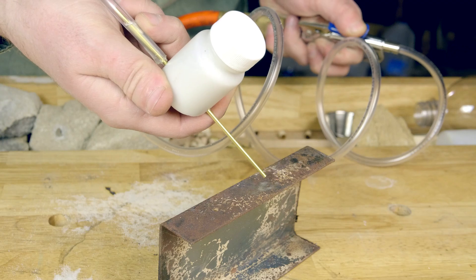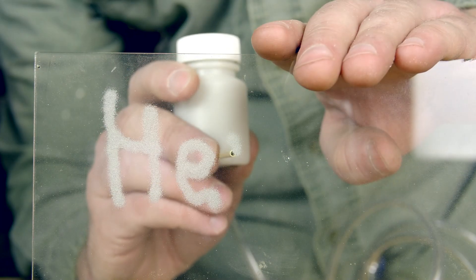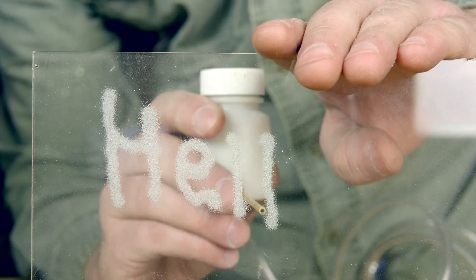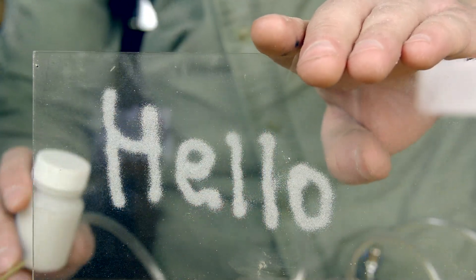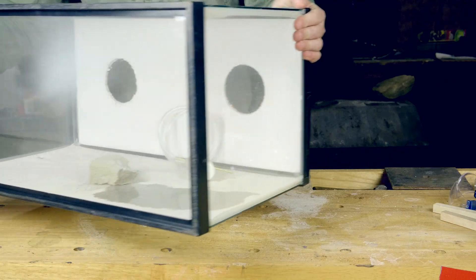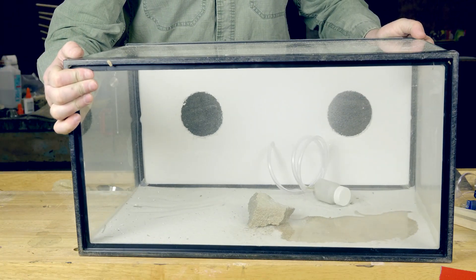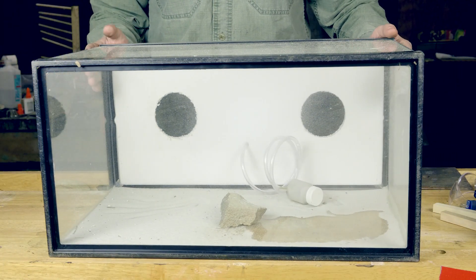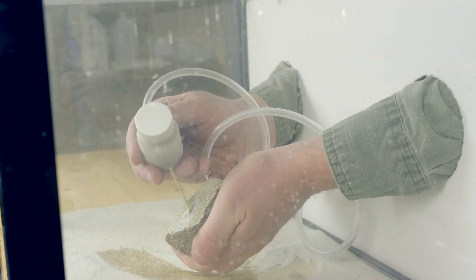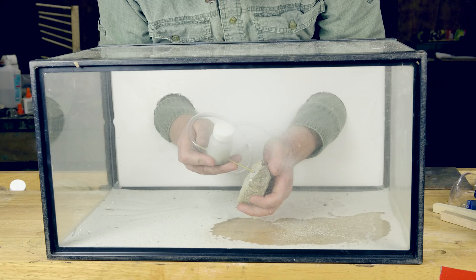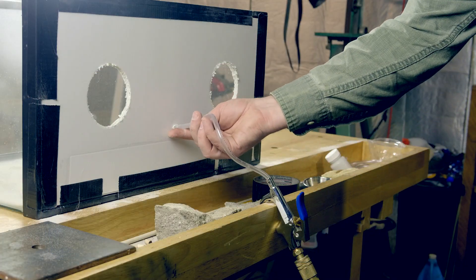This sandblaster can be used to clean parts or etch glass, since sand is of similar hardness to glass itself. I had an old fish tank lying around which I used to make a sandblasting chamber to contain the dust so it doesn't coat everything in my workshop. To do this, I used a piece of foam board to close off the open side of the fish tank with only two holes for my arms and a tiny hole for the sandblaster line to lead inside.